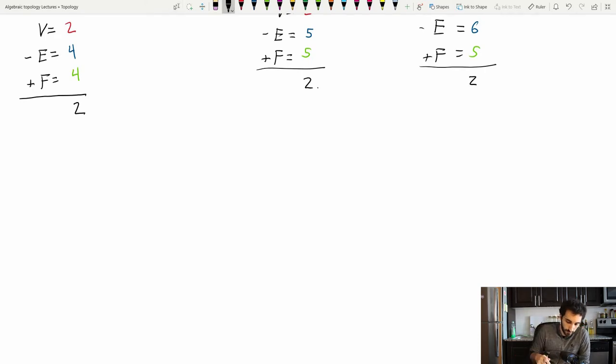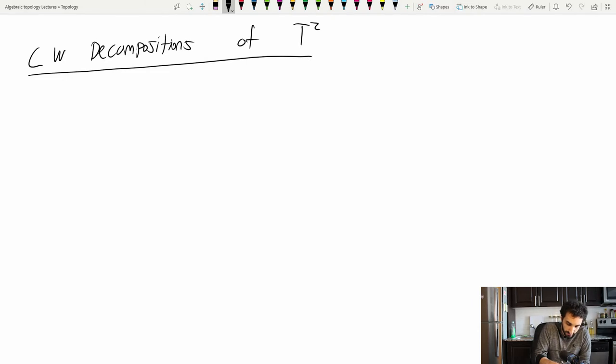Let's do the same exercise now maybe on a different topological space. Let's do it on the torus. So I'll look at the torus as a square with the sides identified as usual. Usually we take the boundary of the square to be the CW decomposition but we don't have to do that and in this case I will not be doing that.